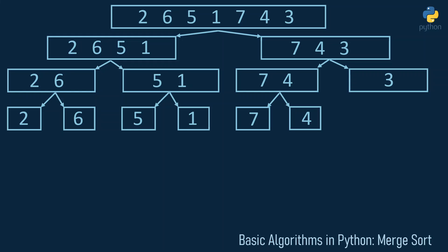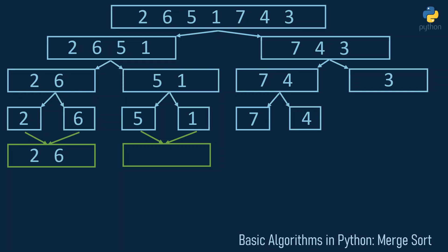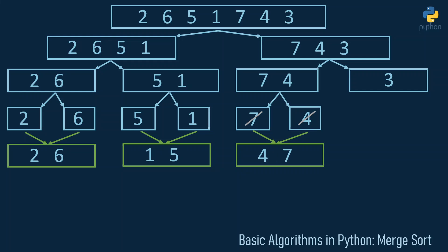We're ready to merge these smaller arrays into slightly bigger sorted arrays. Starting with two and six: we compare them, see that two is less than six, save two first, then six. For five and one: we compare, see one is less than five, save one then five. For seven and four: see that four is less than seven, save four then seven. The three is left untouched for now.